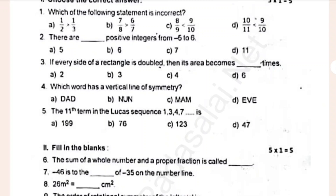Which of the following statements is incorrect? There are dash positive integers from minus 5 to 26. If every side of a triangle is doubled, then its area becomes dash times. Which video has a vertical line of symmetry? The 11th term in the Lucas sequence 1, 3, 4, 7 is dashed.